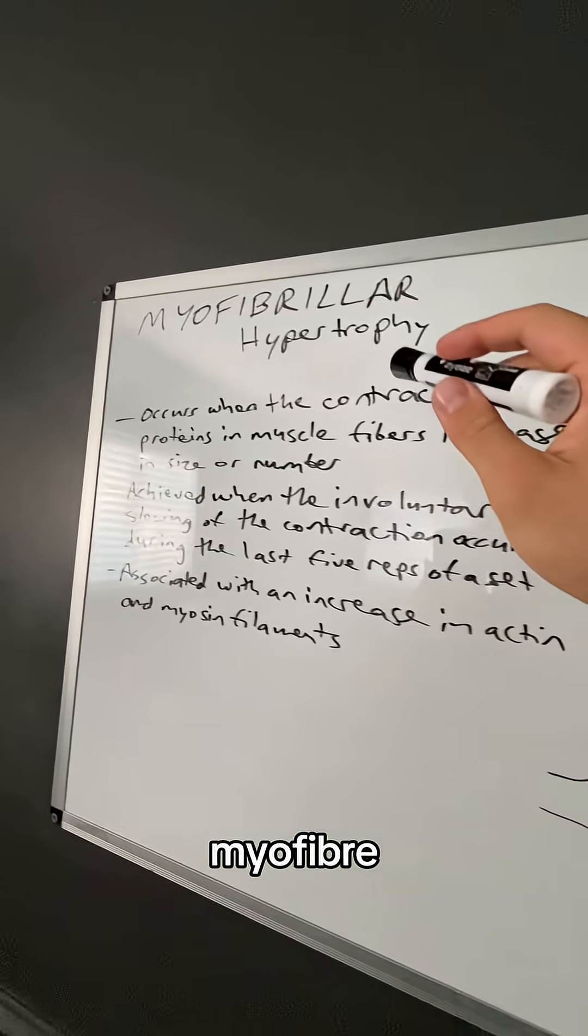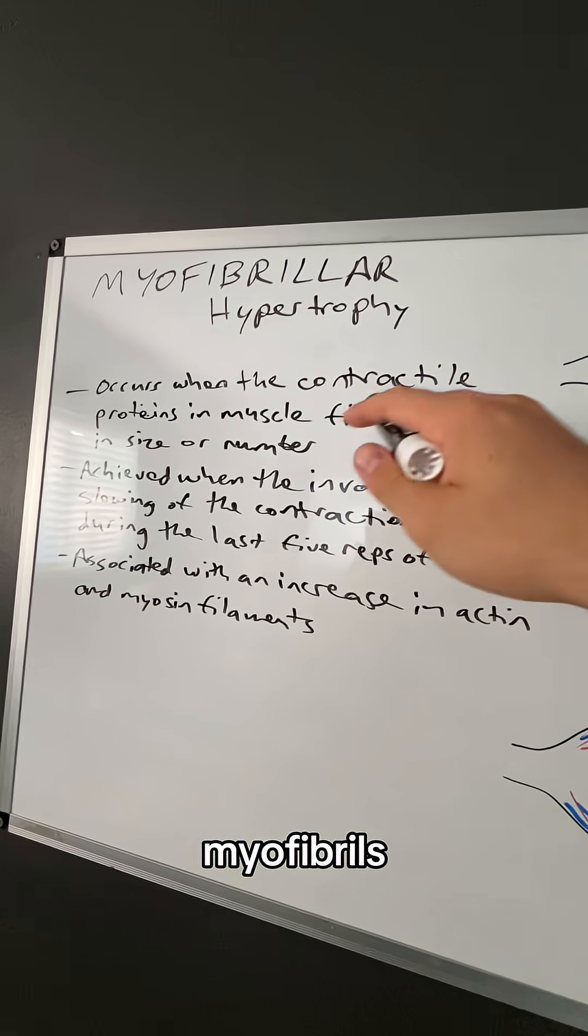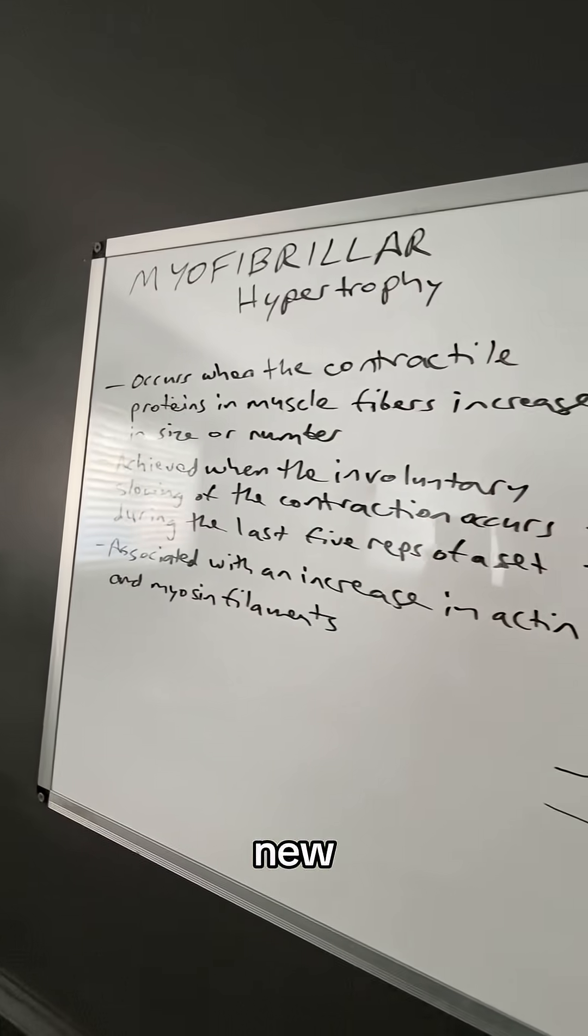So myofibrillar hypertrophy is the addition of new contractile tissues or new myofibrils inside the muscle. The intended muscles getting new muscle fibers.